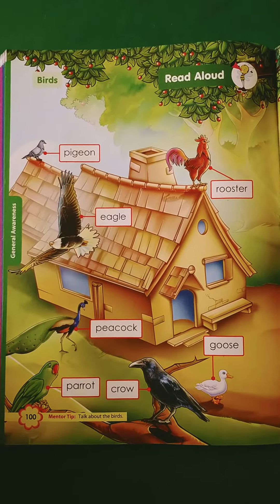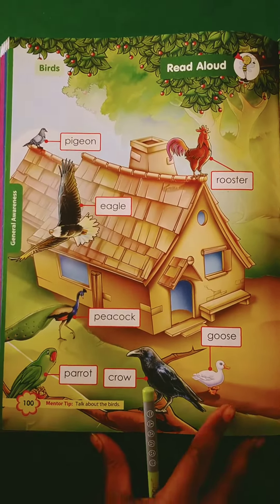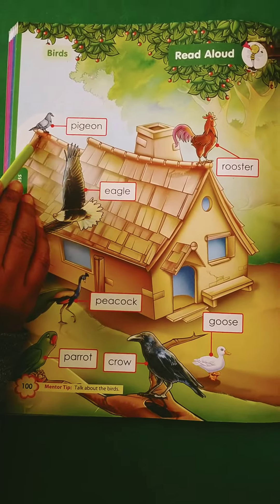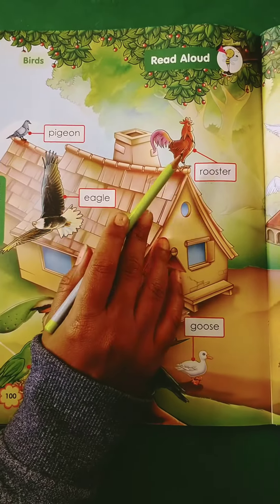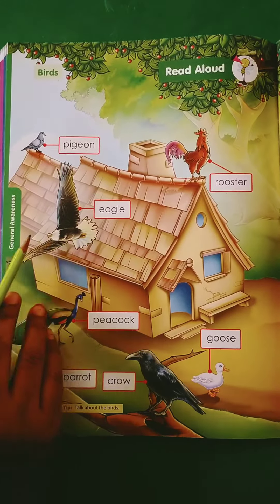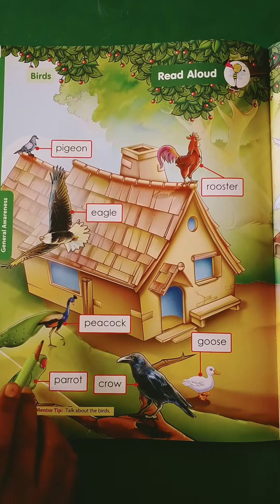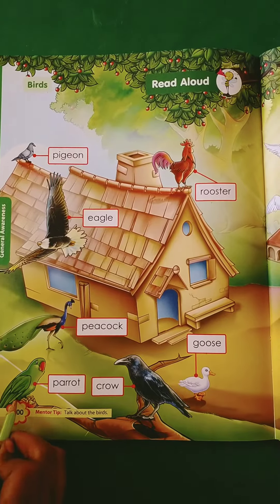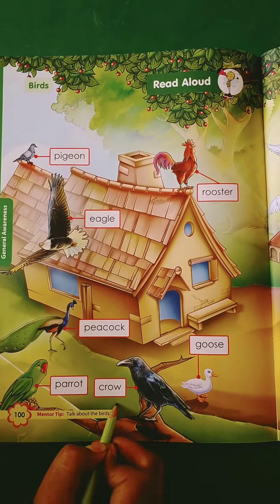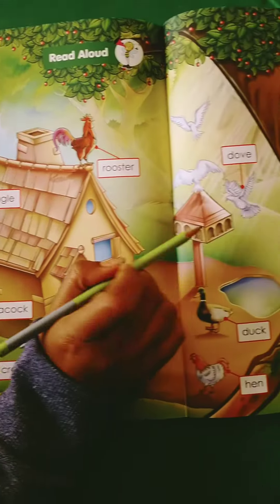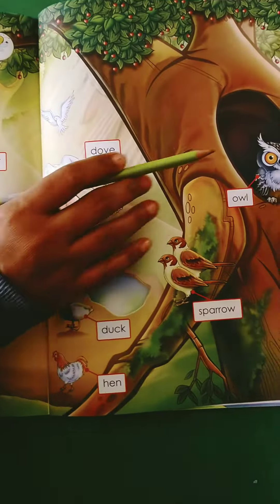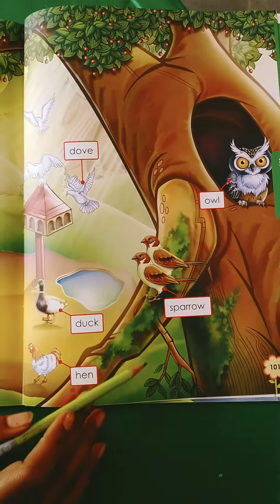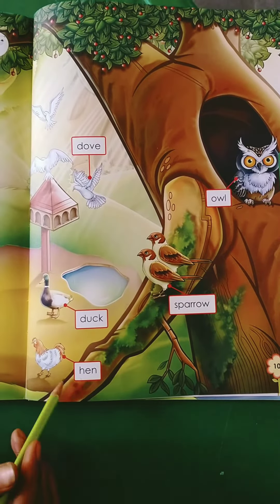So learn any 5 names of birds. Look here: pigeon, rooster, eagle, peacock, goose, parrot, crow, dove, owl, duck, sparrow and hen.